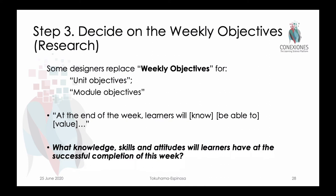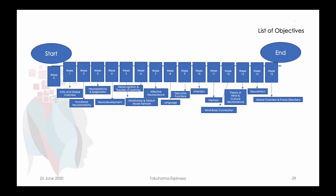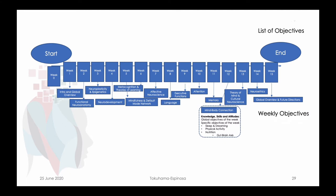For every single topic, we do the same thing. For example, in the mind-body connection, we look at it at the level of knowledge, skills, and attitudes. We have a global objective for the week but also specific sub-topic objectives — in mind-body, we look at sleep and dreaming, physical activity, and nutrition. Within nutrition, there's a further sub-topic of the gut-brain axis. By defining these weekly objectives, we had to do a lot of research, and that research also helped us build up the bundles — the mini-libraries we use to curate information for students on that specific topic.